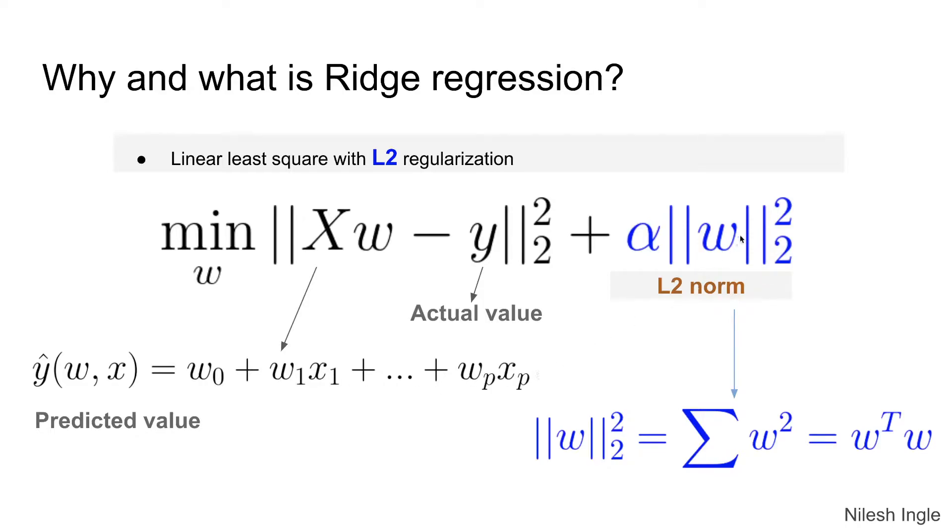And on the right hand side in blue we have the regularization term where alpha is the regularization parameter. So if we increase or decrease the value of alpha, it in turn changes the value of w and as the values of w change we can change the value of the predicted output.